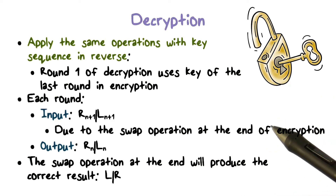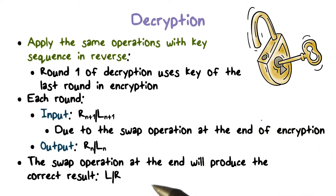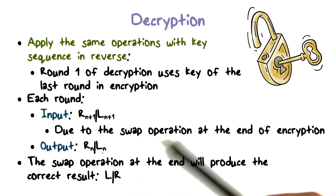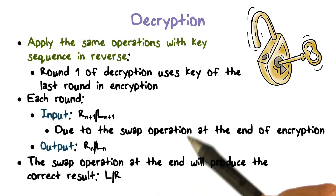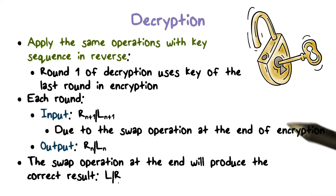Therefore, after the 16th round of the decryption process, the output will be R and L in plain text. And the final swap operation at the end of the process will produce the correct plain text result, L and R, in the correct order. And this is how decryption in DES works.